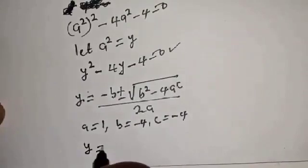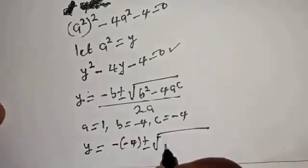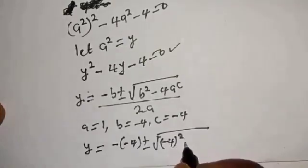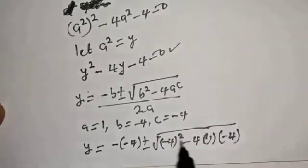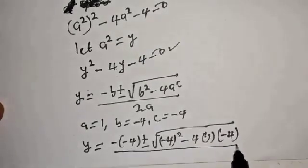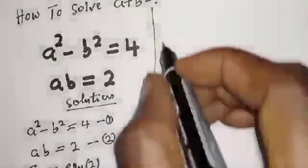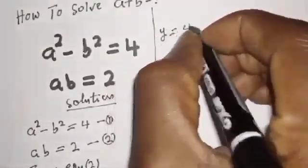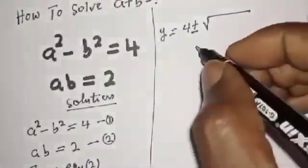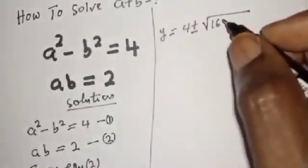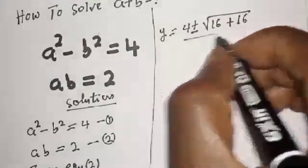Here a equals 1, b equals minus 4, c equals minus 4. So y equals minus (minus 4) plus or minus square root of (minus 4) squared minus 4 times 1 times (minus 4), over 2 times 1. That gives y equals 4 plus or minus square root of 16 plus 16, over 2.